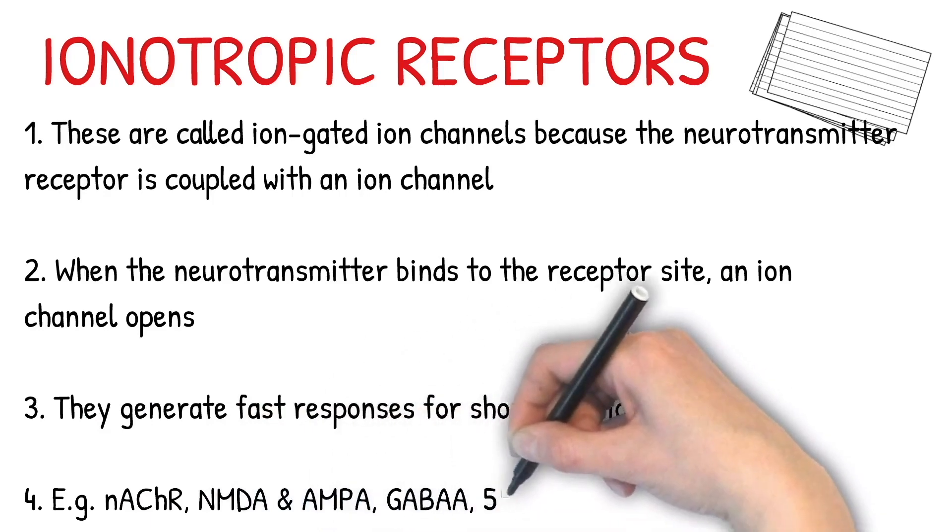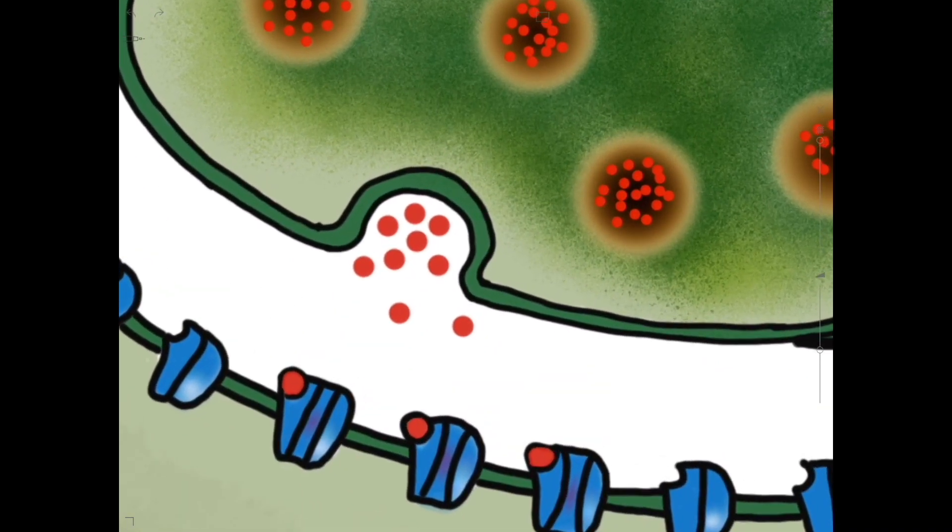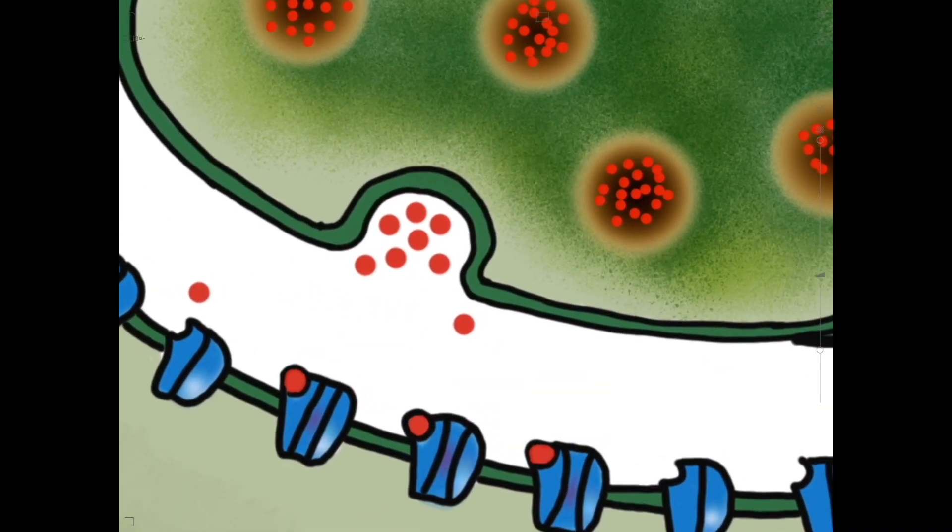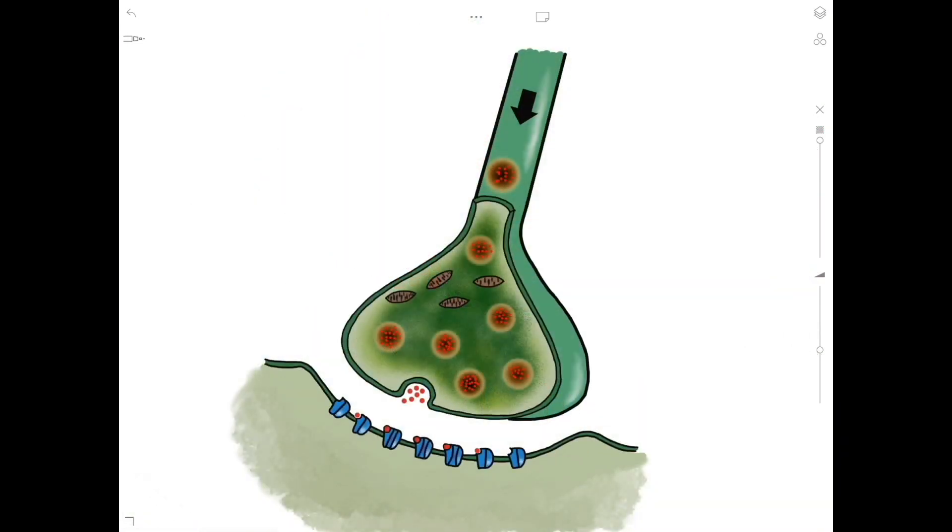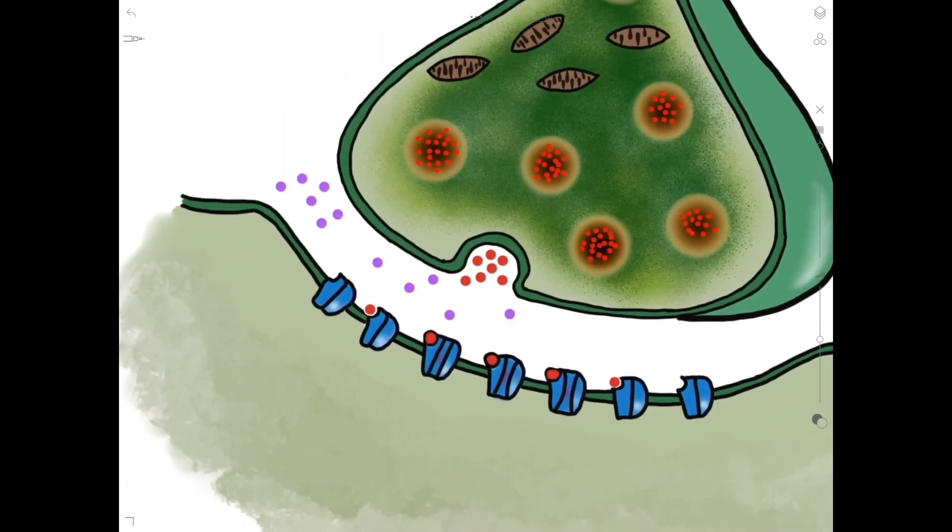Let's see how this works. The neurotransmitters shown in red here are released from the presynaptic neuron and enter the synaptic cleft. Here they diffuse through to reach the postsynaptic cell where they bind to their receptor sites. There are various ions shown here in purple which are floating around in the synaptic cleft. Once the neurotransmitters have bound to their receptor sites,